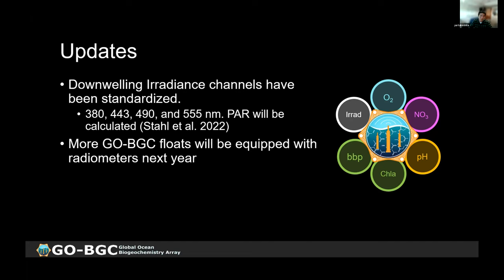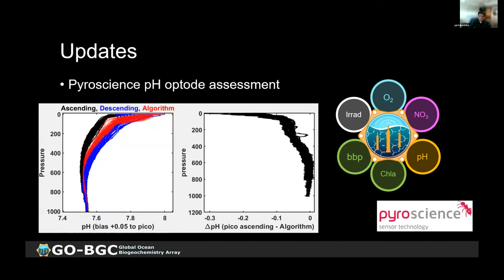There is growing interest in alternative pH sensors. We are exploring the PyroScience pH optode. Using underwater gliders, the standard foils show that the sensor response time is slow, leading to large hysteresis between descending and ascending profiles. We are working with PyroScience to test a faster response foil, and hope to have several floats with this updated foil deployed in the next couple of months.